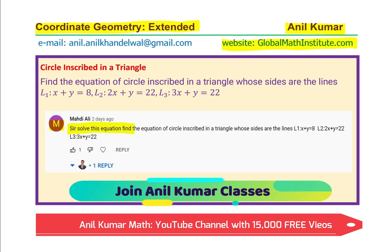The question is, find the equation of circle inscribed in a triangle whose sides are the lines L1: x plus y equals to 8, L2: 2x plus y equals to 22, L3: 3x plus y equals to 22. So, three lines are given to us and definitely they will intersect and form a triangle. We need to find equation of circle inscribed in this particular triangle.